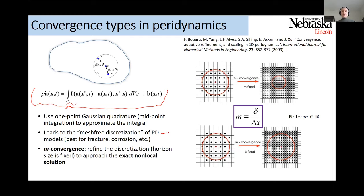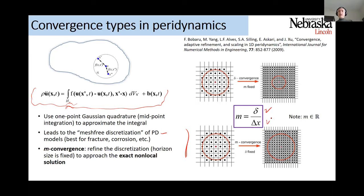In terms of numerical convergence, one approach is to improve your quadrature by keeping the horizon fixed and reducing the spacing of your grid. You can form this ratio of the horizon size versus the grid spacing — we call this m. As you take m to go to infinity, making your discretization finer and finer, in principle you should approach the exact non-local solution of your problem.